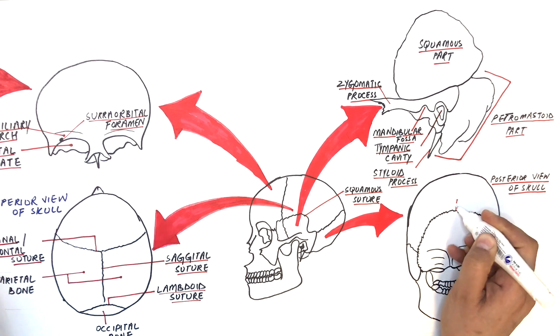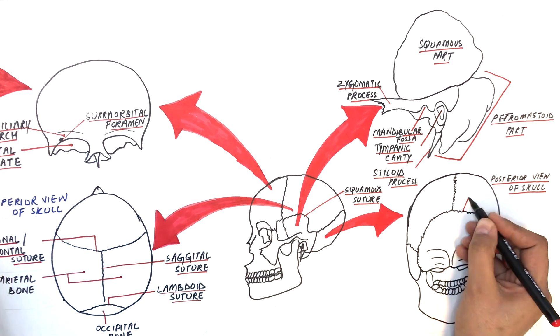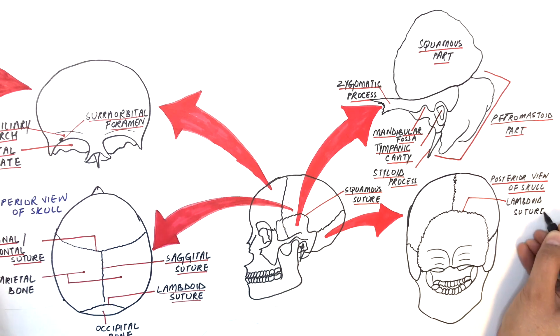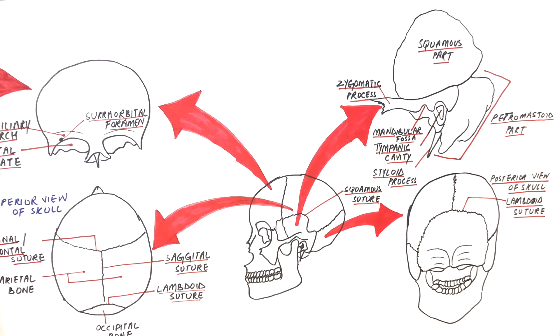The features of the occipital bone which we can see in this posterior view is the lambdoid suture, where the occipital bone joins with the two parietal bones. The next feature of the occipital bone which we can see here is the bony prominence called the external occipital crest, and this is the site for attachment of certain ligaments.